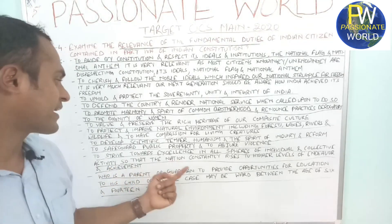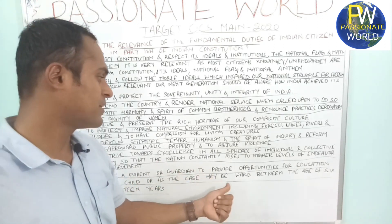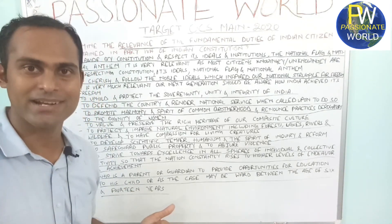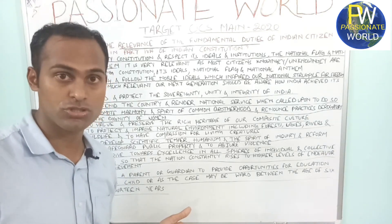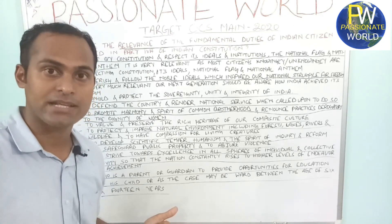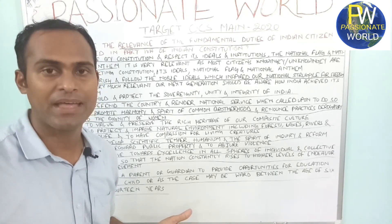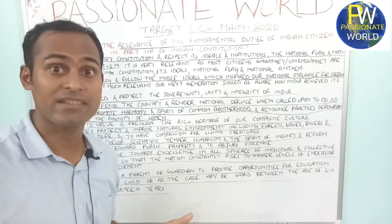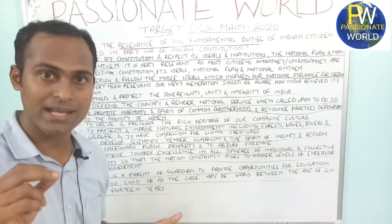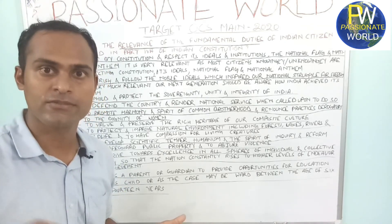The eleventh duty, added by the 86th Constitutional Amendment Act 2002, is for every parent and guardian to provide opportunities for education to their child between the ages of 6 and 14 years. If we do not give education to our children, we are keeping them in the dark and keeping the nation's future in the dark. So it is very essential that as parents and guardians we give them education from age 6 to 14.